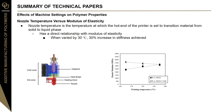Nozzle temperature is the temperature at which the hot end of the printer is set to transition the material from a solid to a liquid phase. It was found to have a direct relationship with the modulus of elasticity. When varied by 30 degrees Celsius, a 30% increase in stiffness was achieved. This is because as you melt more material, there is a less porous final part with fewer micro-cracks in the structure, and therefore stiffness increases.